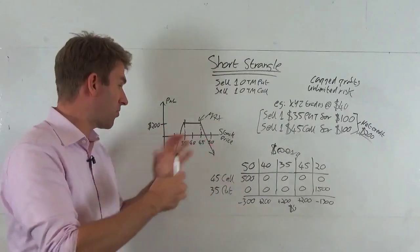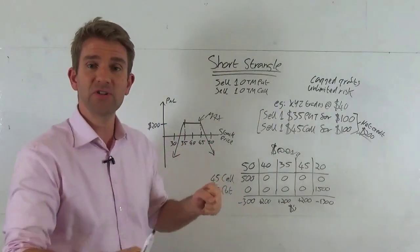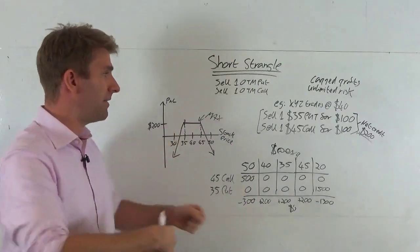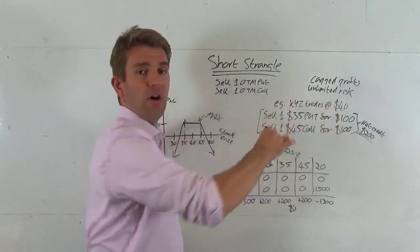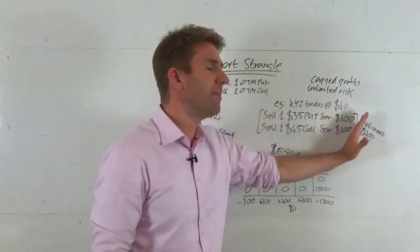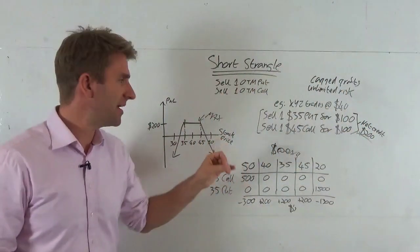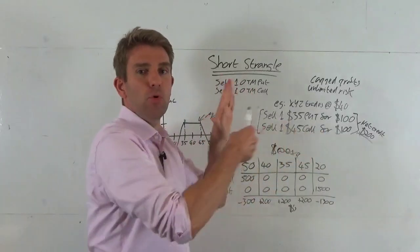Of course we can make it wider if we decide to. We can say okay well let's go for $50 and a $30 put. Now those are going to be cheaper so you're not going to get as much credit. Of course the narrower you have it the more credit you get because you've got to be more right, more correct. The wider you have it the less credit you're going to get but of course you've got more room for error.